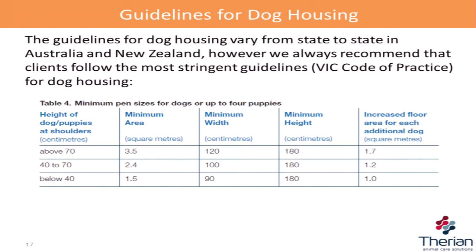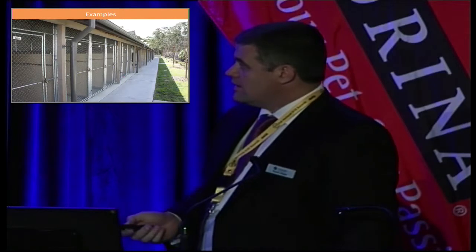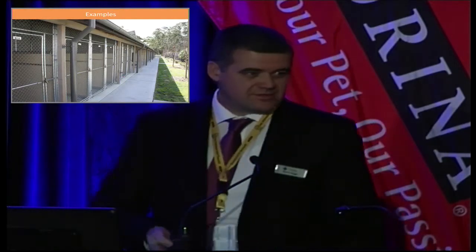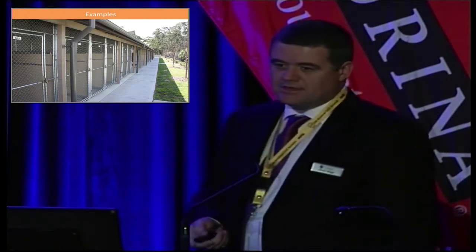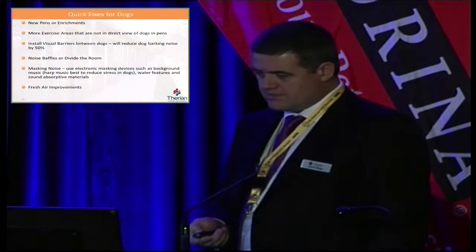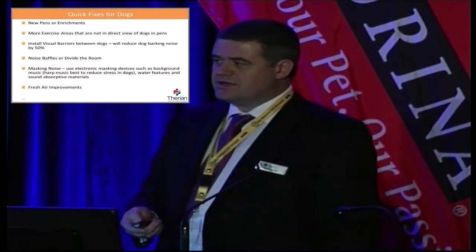For dogs, guidelines for dog housing are again very state-by-state and country-by-country. We take Victoria's as the most stringent. Some examples here: these dogs are looking onto a wall — they can't see other dogs. This one is AWL New South Wales; those dogs are looking out onto nice landscaping, again not looking at other dogs.